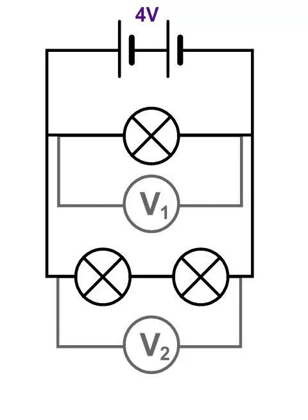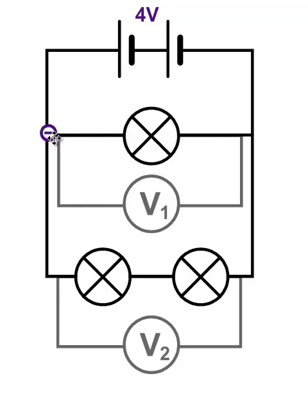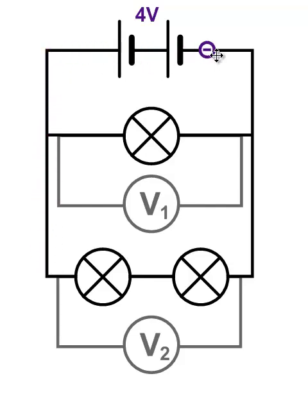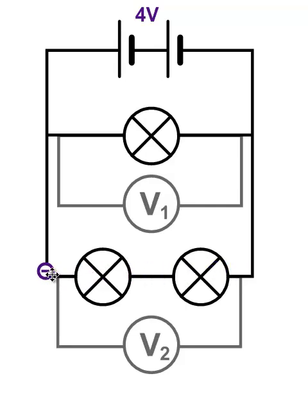To work out what's going on here with the potential differences, we need to have a look at the current that flows in the circuit. The current consists of electrons. Those electrons flow around the circuit and they can either go through the middle branch or they can go through the lower branch of that parallel circuit — but they only go through one or the other. So they pass through the cells and either go through the middle branch and return to the cells, or they go through the lower branch and return to the cells.